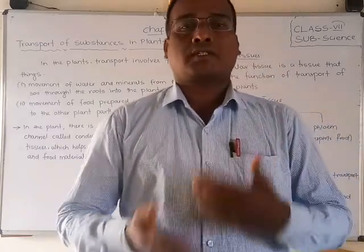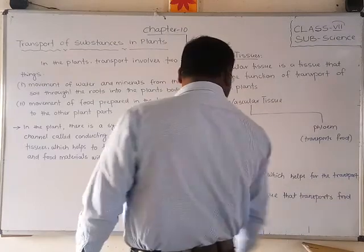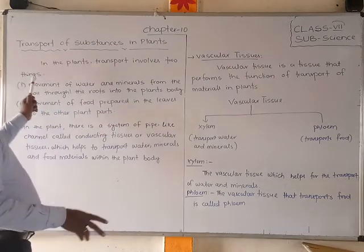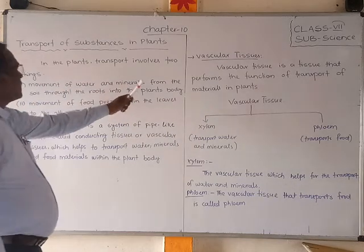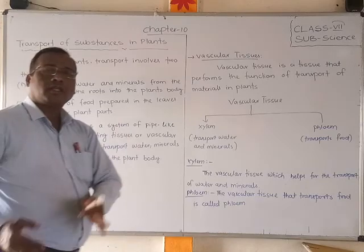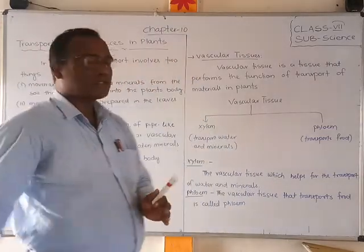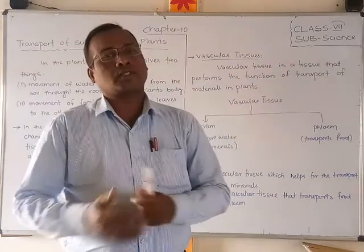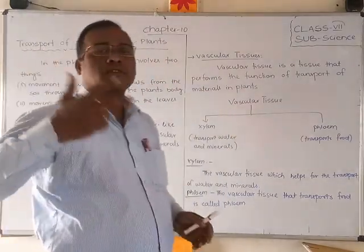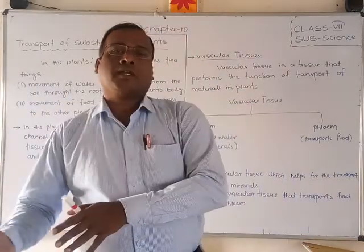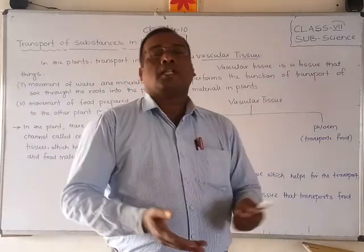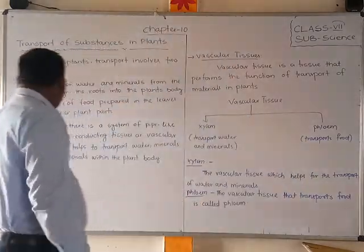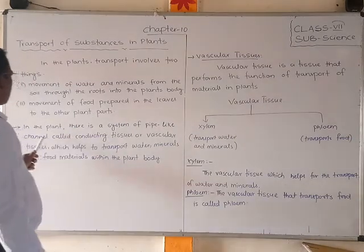Let us discuss what is xylem, what is phloem, what are their functions, and how plants do this transportation. Transport of substances in plants involves two things: one is the movement of water and minerals from the soil through the roots into the plant body, and the other is the movement of food from the leaves to the other plant parts.